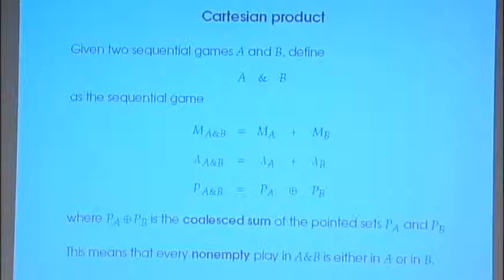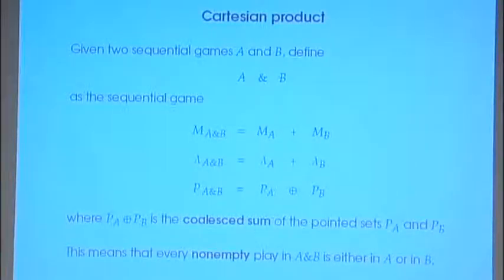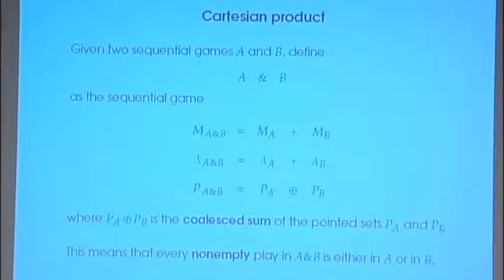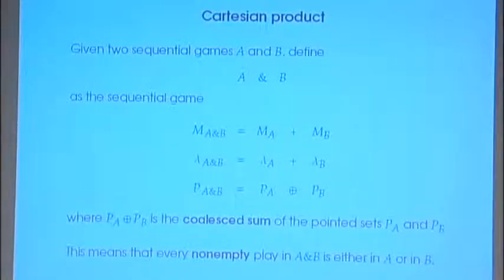That's the big difference between this construction and the tensor product. In the tensor, we can always go from one component to the other — that's the parallelism. Here it's choice, in the sense of process calculus.